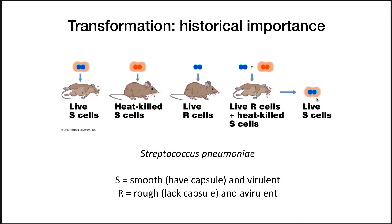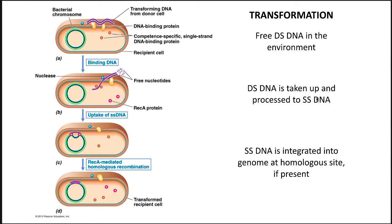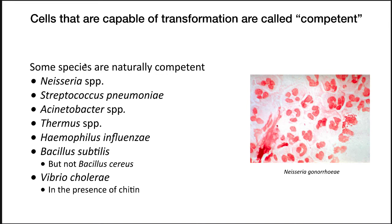So how does transformation work? Free DNA in the environment binds to a DNA binding protein, a single strand is brought in, and this single strand undergoes rec-A-mediated homologous recombination with the chromosome. It turns out that Streptococcus pneumoniae and a number of other organisms are naturally competent — they will take up DNA from the environment. Neisseria species, Streptococcus, and others are naturally competent and have this capability. In some ways this is surprising, because it seems dangerous to grab random DNA from the environment, but it must be of evolutionary advantage, otherwise it wouldn't have continued.